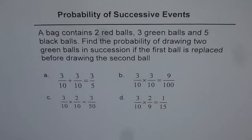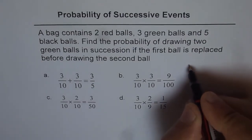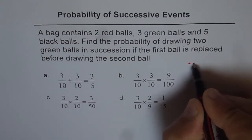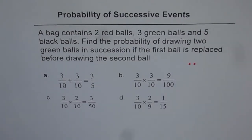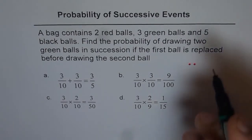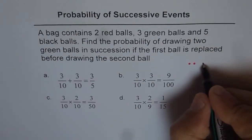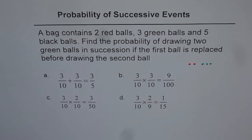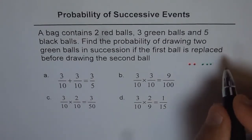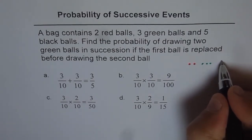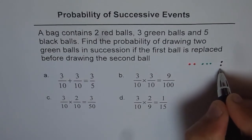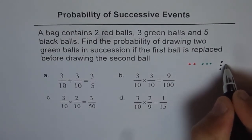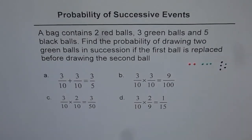So what we have here is two red balls — let's say these are the two red balls — and then we have three green balls. Let's say these are the three green balls, and we also have five black balls. So let me draw five balls here: one, two, three, four, and five.